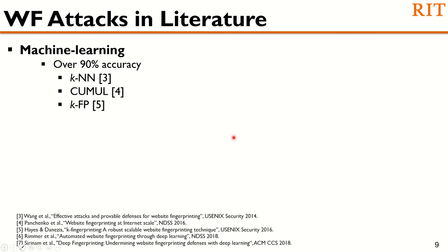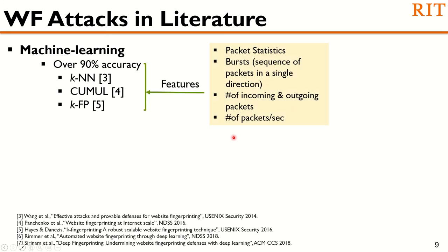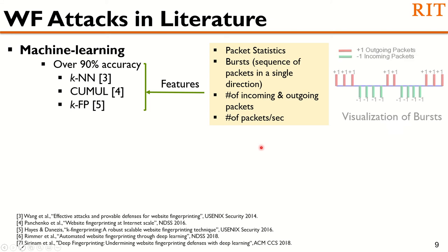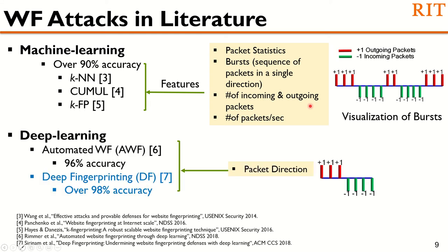Over the years, this attack has got a lot of attention from the research community, and they are able to get over 90% accuracy with different machine learning models. The features primarily used are packet statistics and burst of the traffic. Burst is called the sequence of packets in a single direction. There are certain number of packets in a particular direction — such as the first three outgoing packets, which we call the first outgoing burst. Other features used include the number of incoming packets, outgoing packets, and number of packets per second.